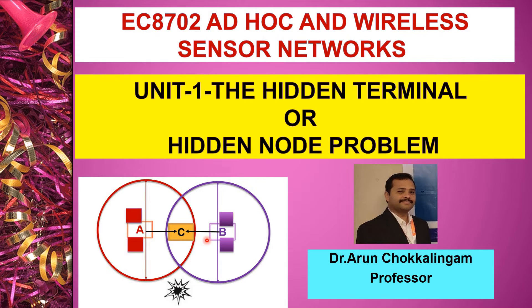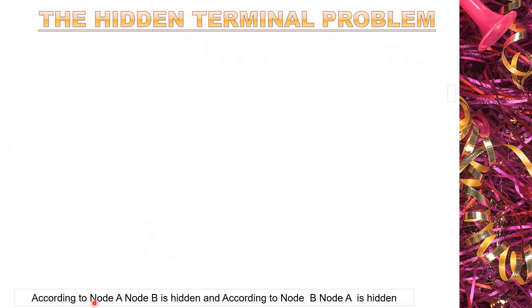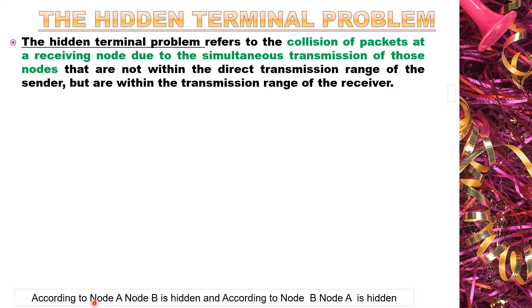In ad hoc and wireless sensor networks, today we are going to discuss the hidden terminal problem, or hidden node problem — how collision is happening in wireless sensor networks or ad hoc networks because of this. The hidden terminal problem refers to the collision of packets at a receiver node due to the simultaneous transmission of those nodes that are not within the direct transmission range of the sender but are within the transmission range of the receiver.